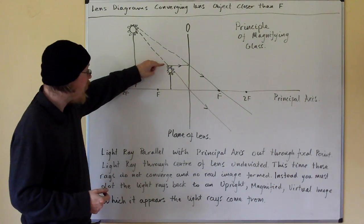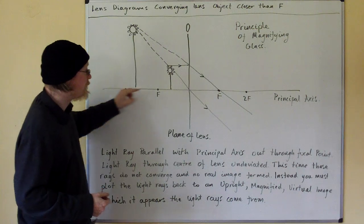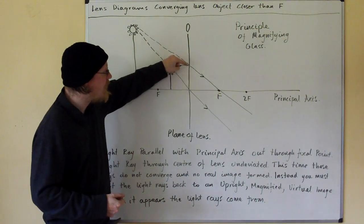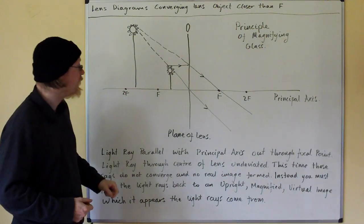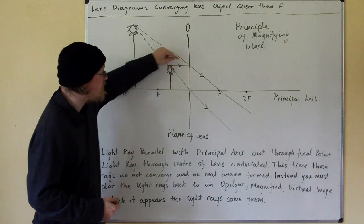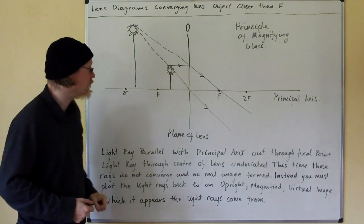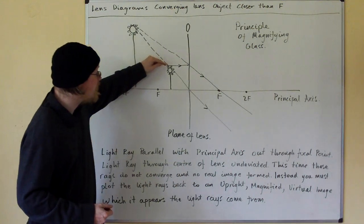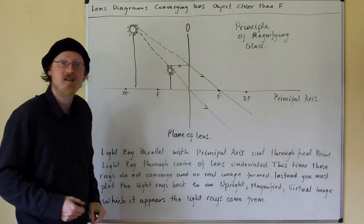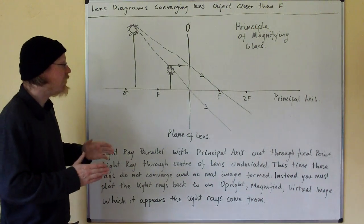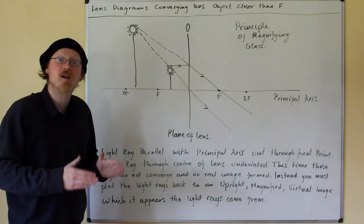We take the light ray parallel to the principal axis, and we know that that will come out through the focal point. So the light ray parallel to the principal axis comes out through the focal point, and the light ray through the centre of the lens is undeviated. But now these two light rays no longer converge.